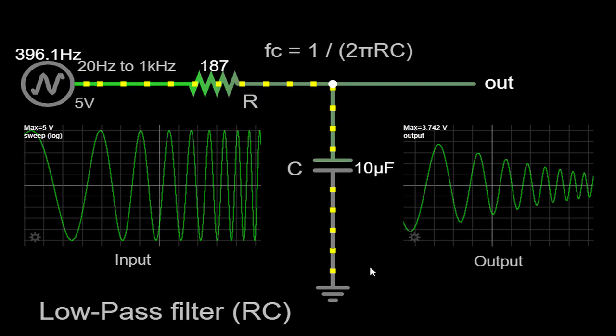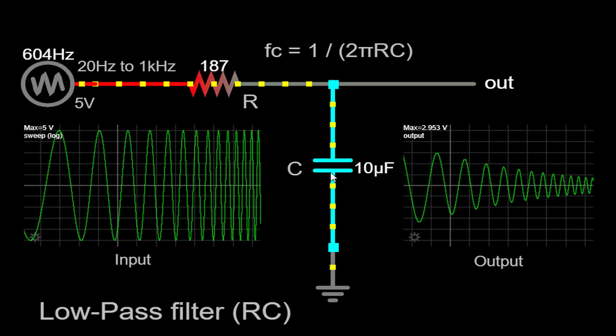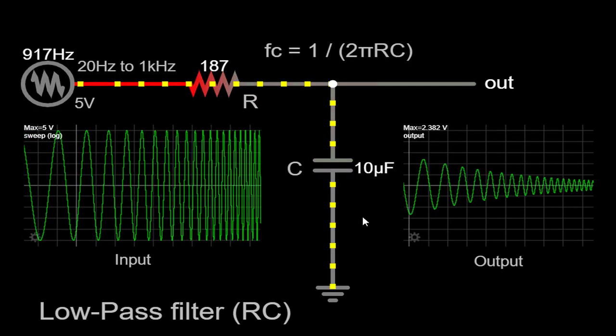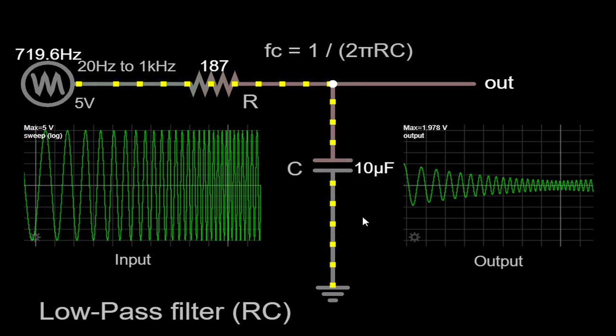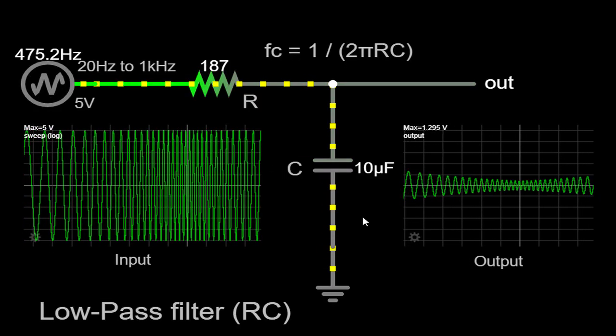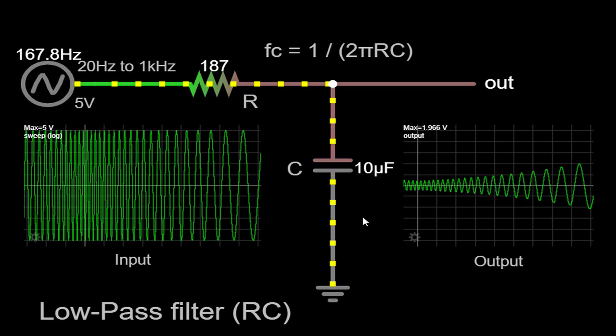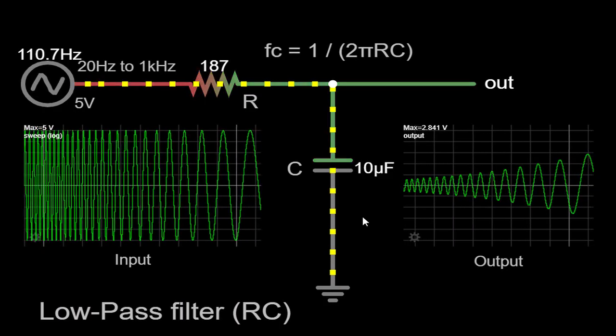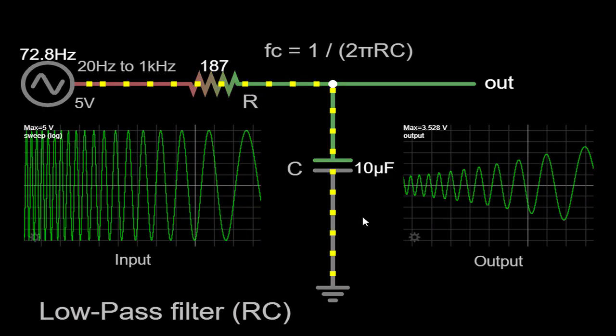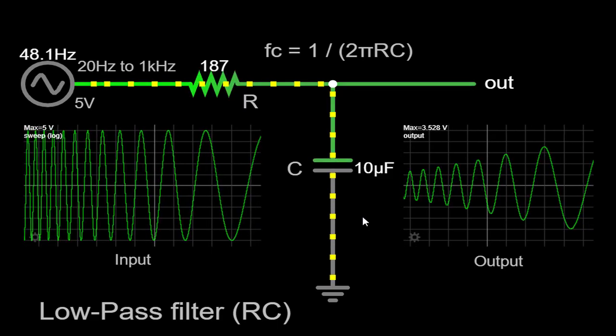By adjusting the values of the resistor and capacitor in the circuit, we can manipulate the cutoff frequency of the low-pass filter. The cutoff frequency represents the point at which the filter begins to attenuate higher frequencies. This flexibility allows us to customize the filter's response to suit specific application requirements.